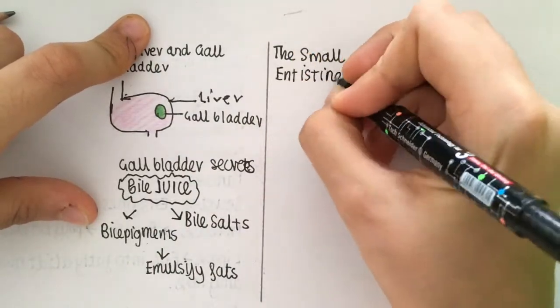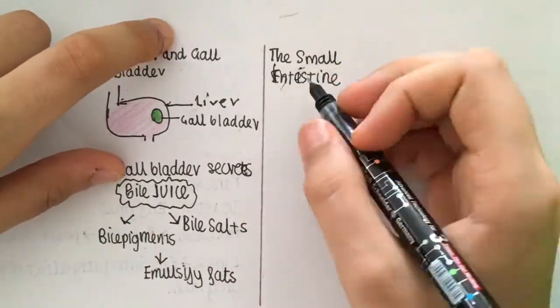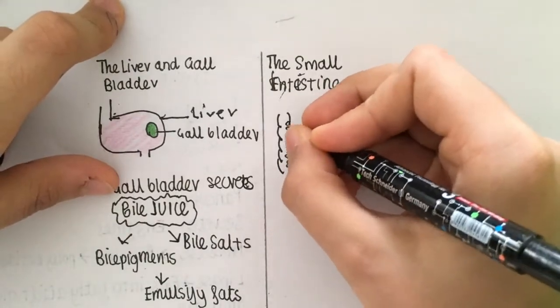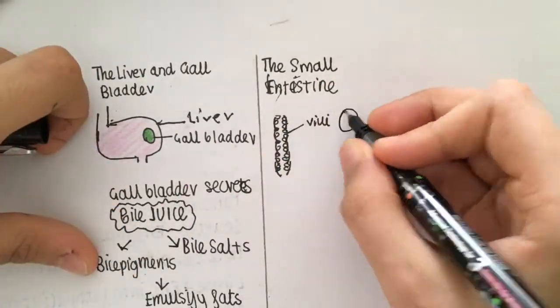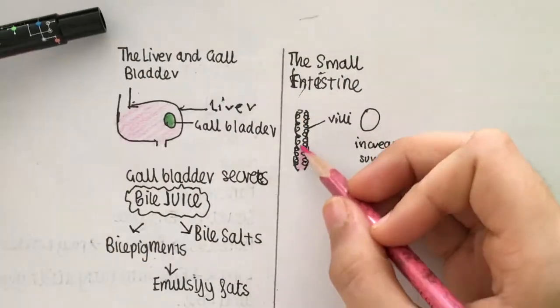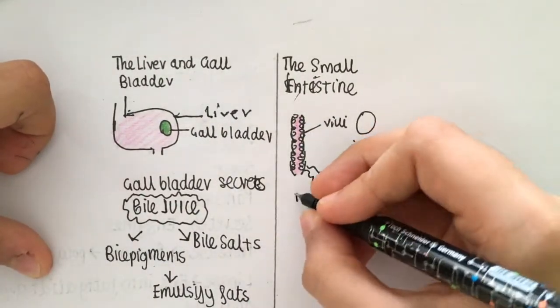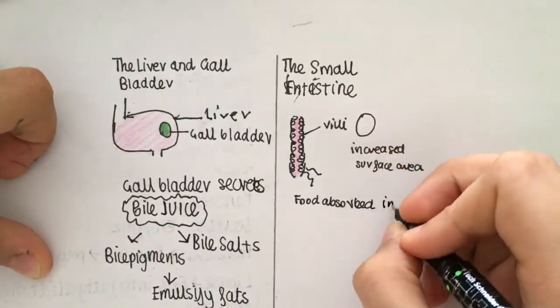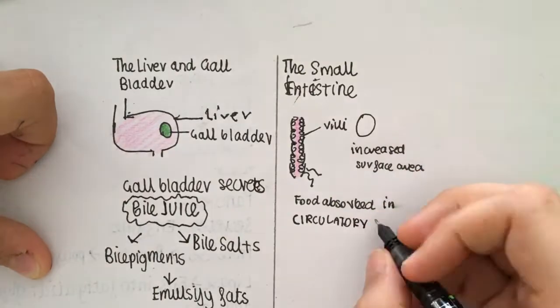The food is then taken into the small intestine, which contains microscopic finger-like projections called villi. The villi create a large surface area for enzymes to act on the food so that it can be absorbed into the lymphatic and circulatory system.